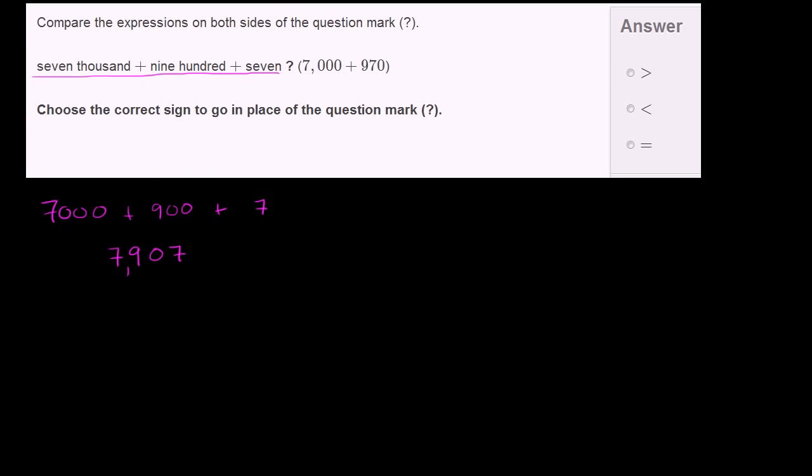Now let's compare that to what we have on the right-hand side of the question mark. On the right-hand side, we have 7,000 plus 970, which is 7,970.